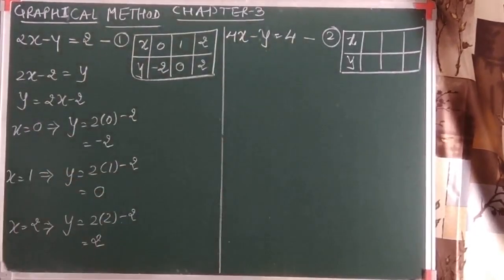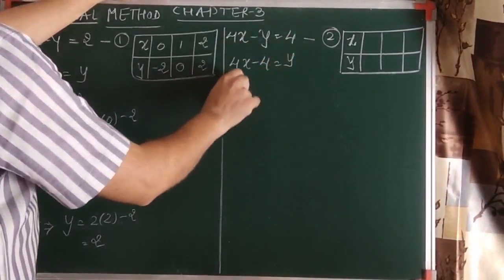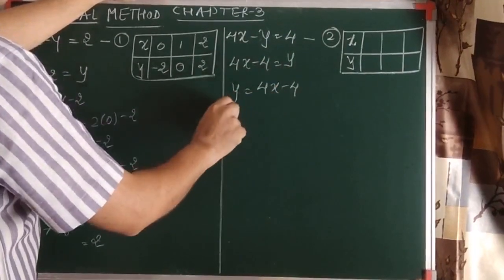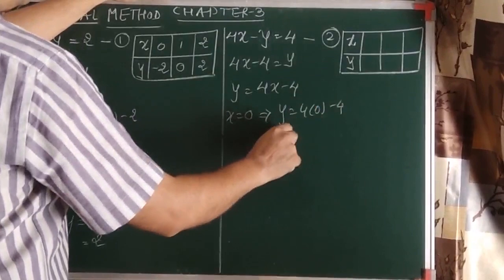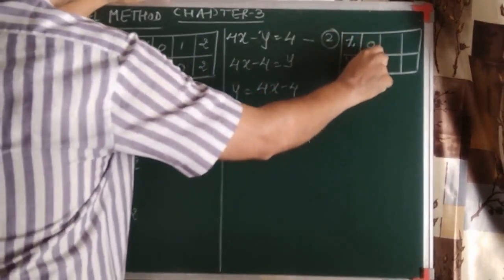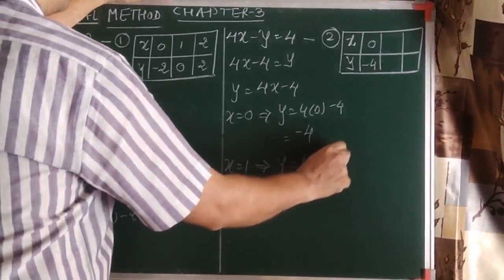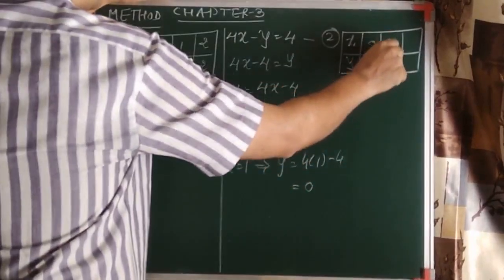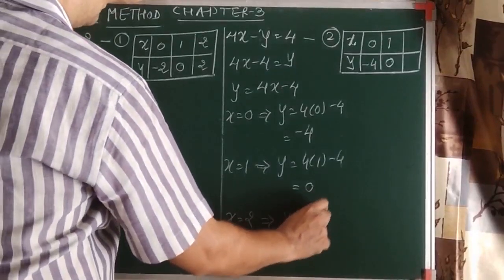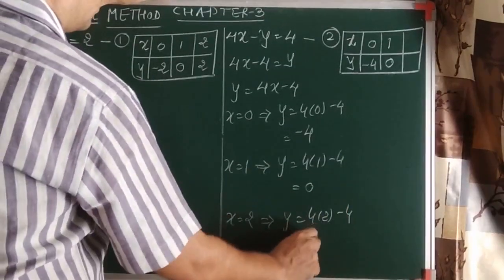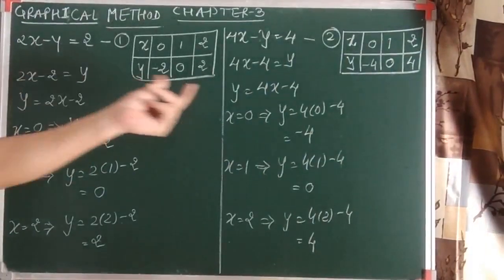Now let's get the solution for the second equation. Again we make y the subject since y has the smaller coefficient, giving y equals 4x minus 4. For x equals 0, y equals minus 4. For x equals 1, y equals 4 minus 4 equals 0. For x equals 2, y equals 8 minus 4 equals 4. These are the solutions for the second equation.